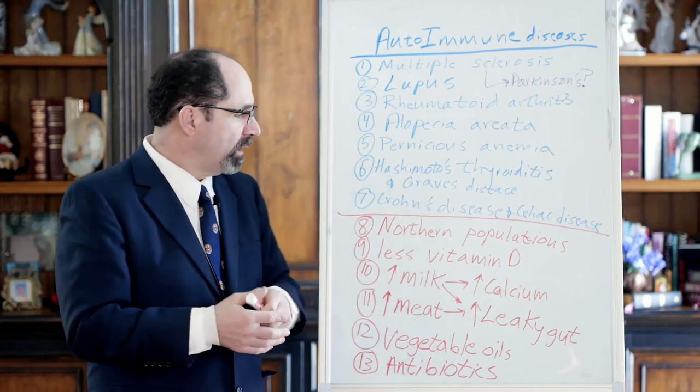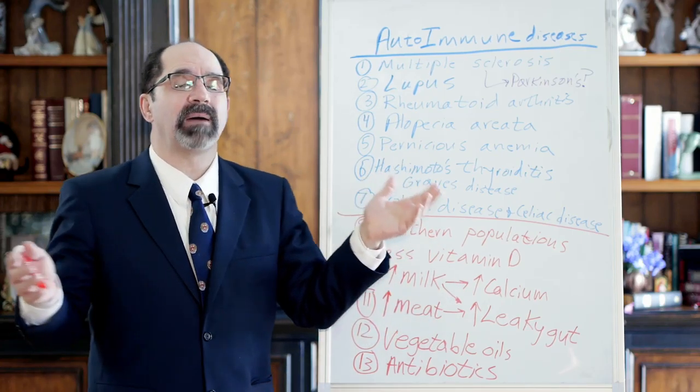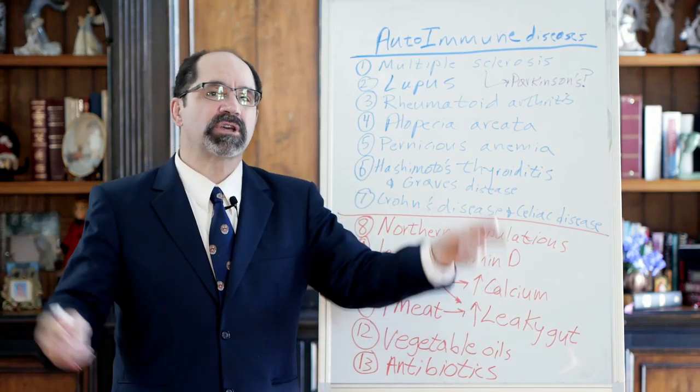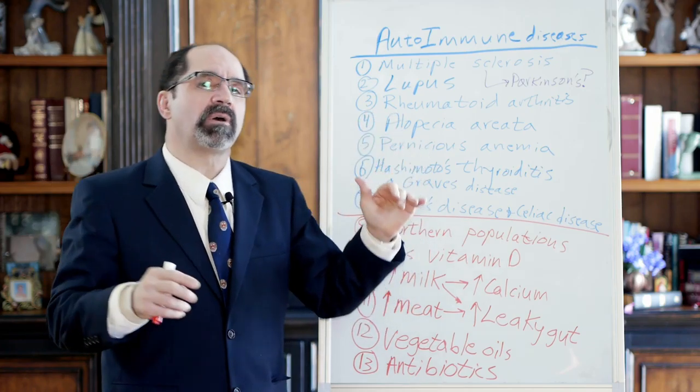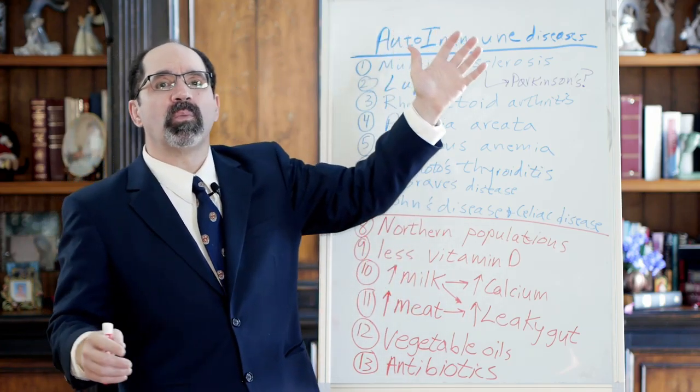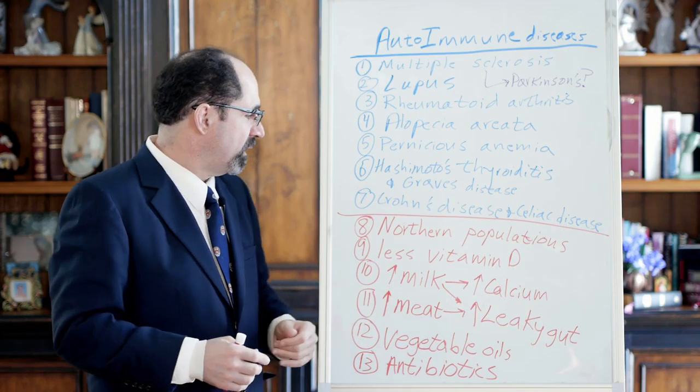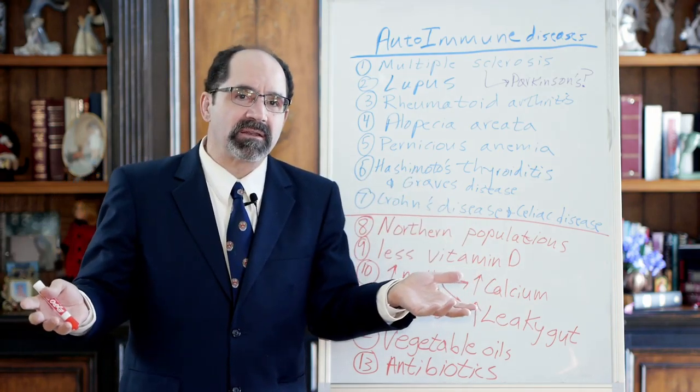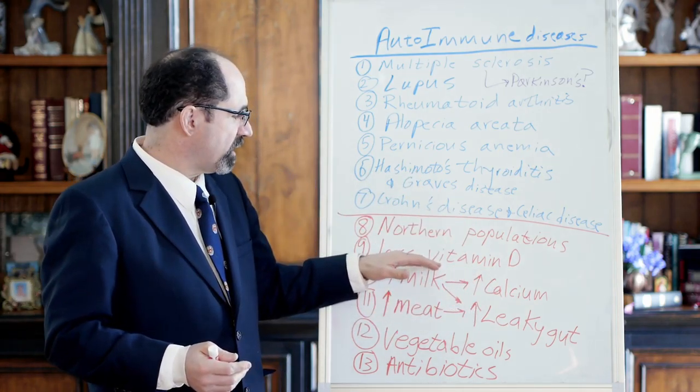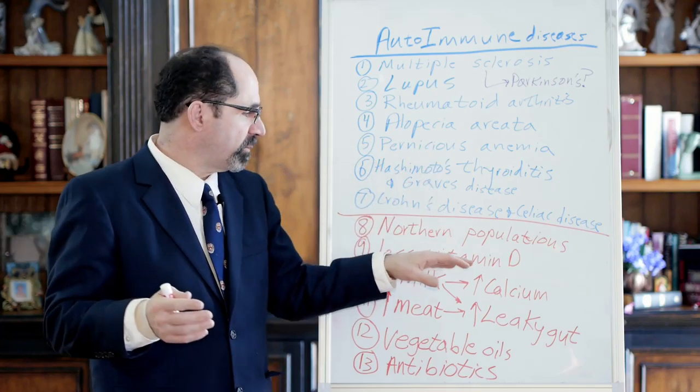Crohn's disease, celiac disease, other autoimmune diseases. Now let's get to some of the universal points. Autoimmune diseases tend to be more common in northern populations. If you look at global distribution of diseases for almost all these autoimmune diseases, you'll see they're way more common in northern areas.